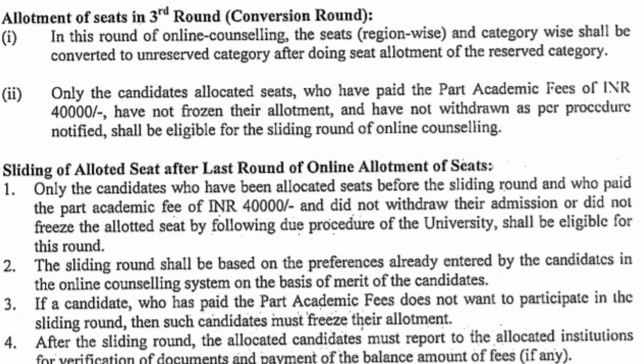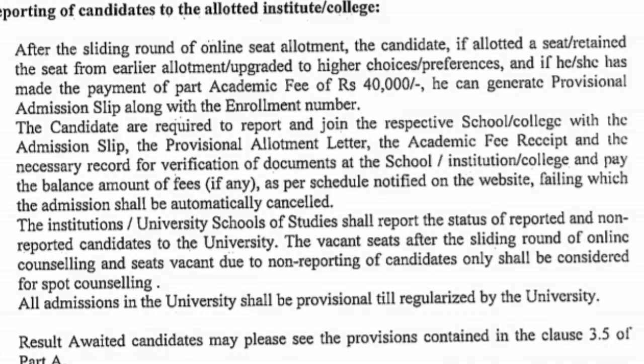After the last round — which is this third round — only candidates who have been allocated seats before the sliding round, have paid the part academic fee of ₹40,000, and did not withdraw will participate in the sliding round. In the sliding round, you cannot fill new preferences; whichever preferences you already filled in the third round will be considered, and admission will be given based on those preferences only.